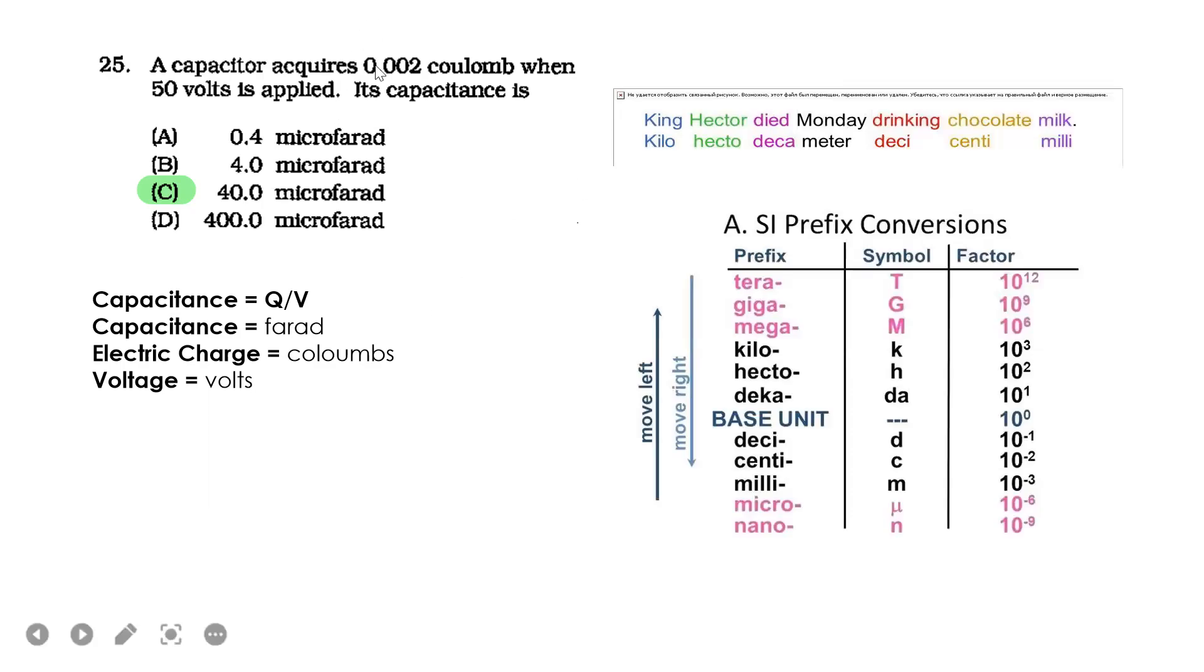A capacitor acquires 0.002 coulombs when 50 volts is applied. Its capacitance is? To remember this: capacitance C equals Q over V. Q is the electric charge measured in coulombs, and voltage in volts.